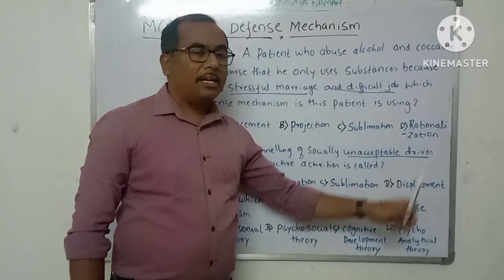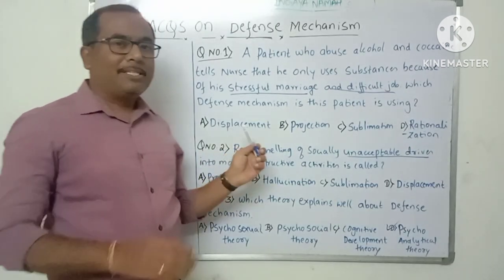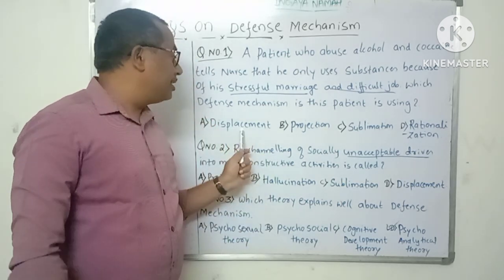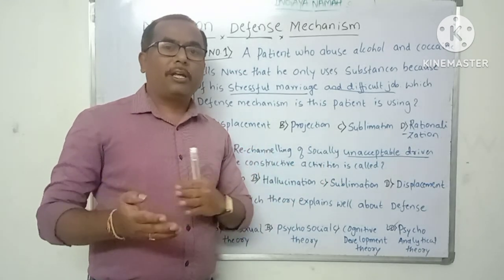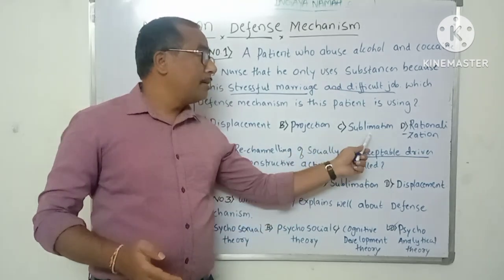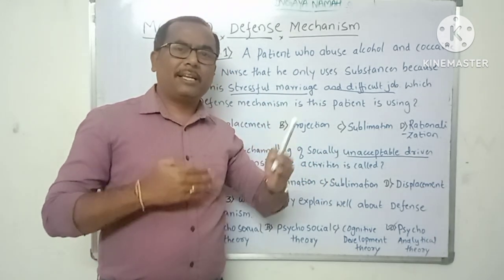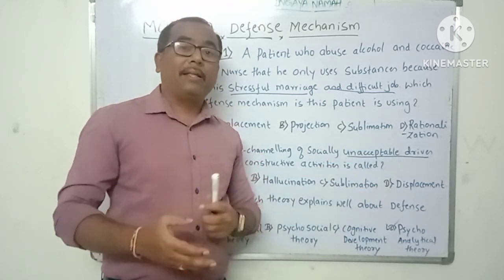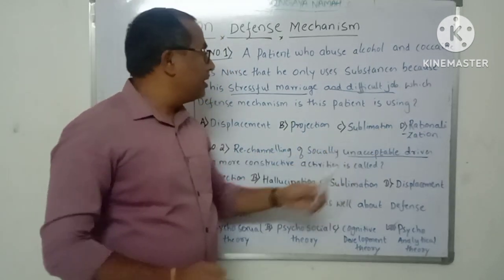We're going to see this is not displacement, not projection, not sublimation — it is rationalization. Displacement means the person displaces his anger and frustration onto a weaker or less threatening person. Projection means the person puts his own faults and mistakes onto others, blaming them. Sublimation means the person channels anger or frustration into a socially acceptable manner. So the correct answer for question one is rationalization.